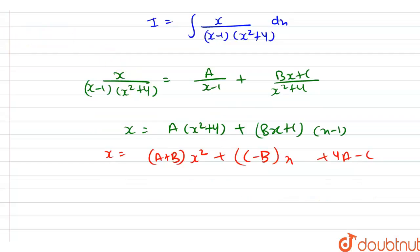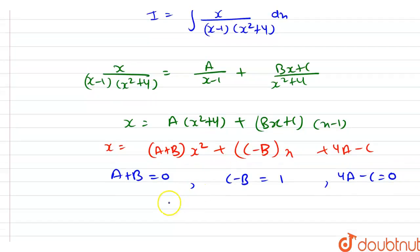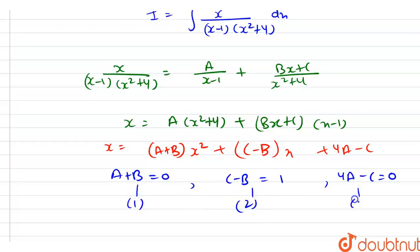Comparing both sides, we get three equations: A plus B equals 0 (equation 1), C minus B equals 1 (equation 2), and 4A minus C equals 0 (equation 3).